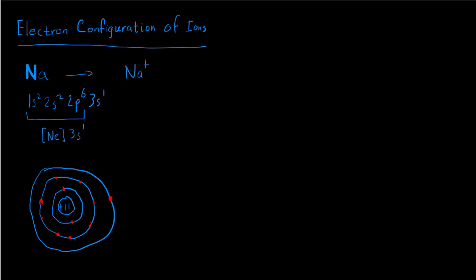So now we're going to form this sodium cation. To form the sodium cation, we're going to have to remove an electron. We could write this as an ionization reaction: Na metal going to Na+ plus 1 electron. The question is, which electron do we remove? The answer is easy — you're going to remove the electron that is easiest to remove, and typically that will be the outermost electron. In our case, that's going to be the one in the 3s orbital. So we're going to remove that electron.